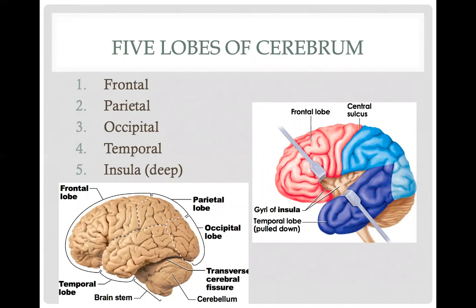Now let's talk about the five major lobes of the cerebrum. Recall from your study of the skull: the cranium is formed by the frontal bone, occipital bone, paired parietal bones forming the top, and paired temporal bones forming the sides. When naming the lobes of the brain, we name them based on the bones that are covering or protecting that part of the brain — though the boundaries are not identical.